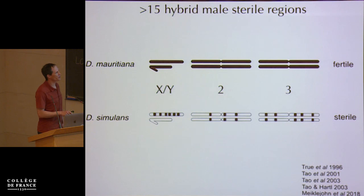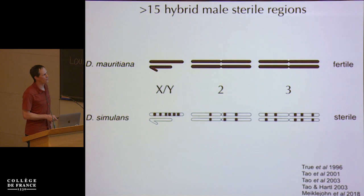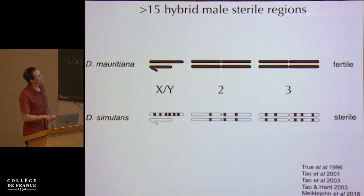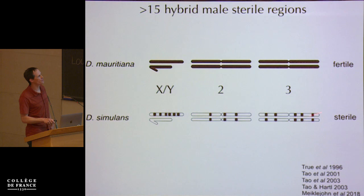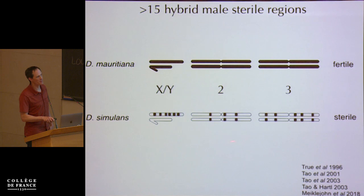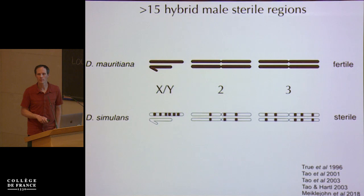This particular cross, where we look at the effect of *mauritiana* alleles in a simulans background, has been studied for more than 30 years. What has come out of that is that there are at least 15 regions of the genome that, when moved from *mauritiana* into simulans, are sufficient to completely sterilize males — each one causes males to be sterile. Most of the autosomal regions are recessive, so you need two copies. About half of the sterility factors are on the X chromosome, so these sterility regions are strongly enriched on the X chromosome relative to the autosomes.